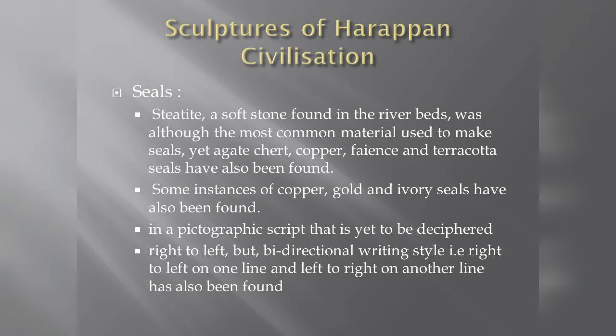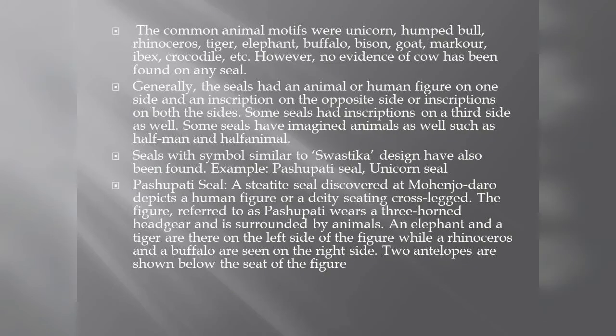The average sculptures are seals made of soft stone. There are also copper, terracotta, gold, and ivory artifacts. The Harappan script has not been fully deciphered; the writing runs right to left and is bi-directional. The seals depict animals such as rhinoceros, tiger, elephant, and buffalo, and some feature human figures and swastika symbols.